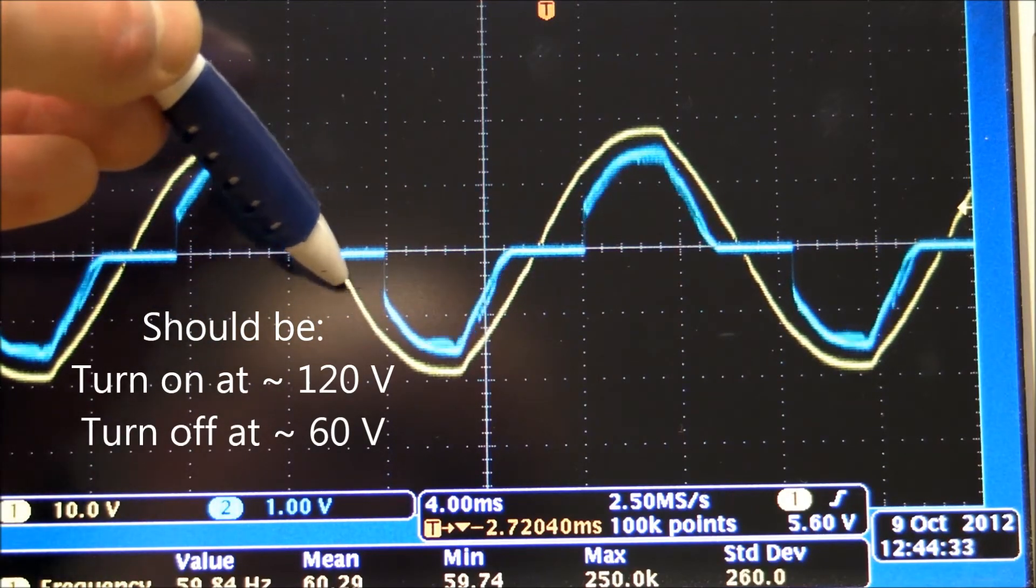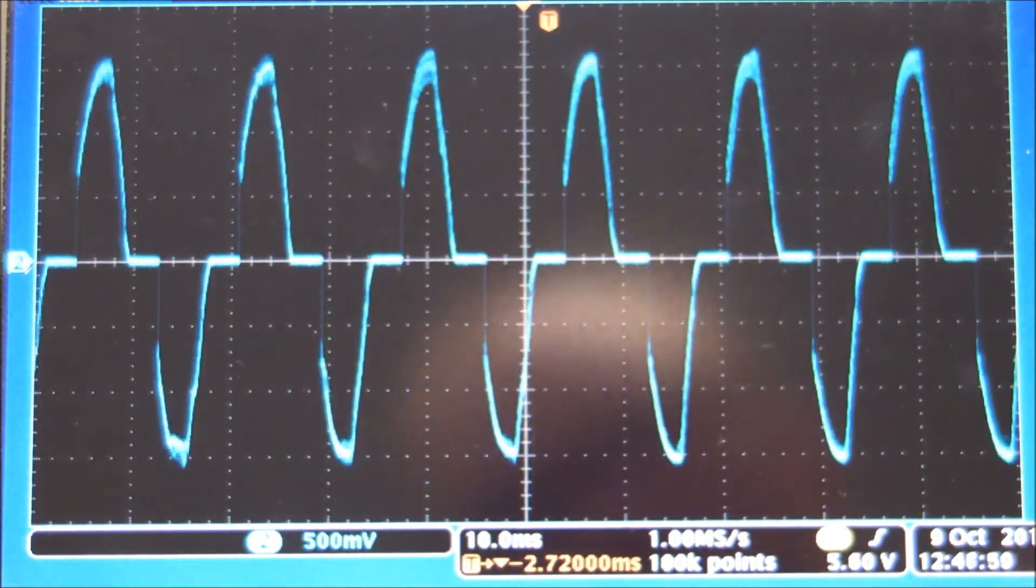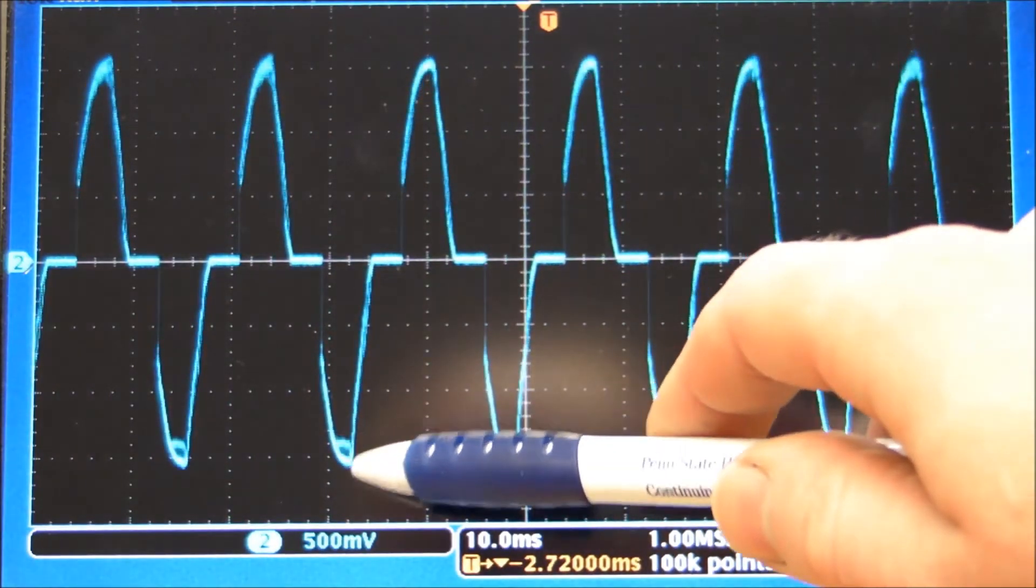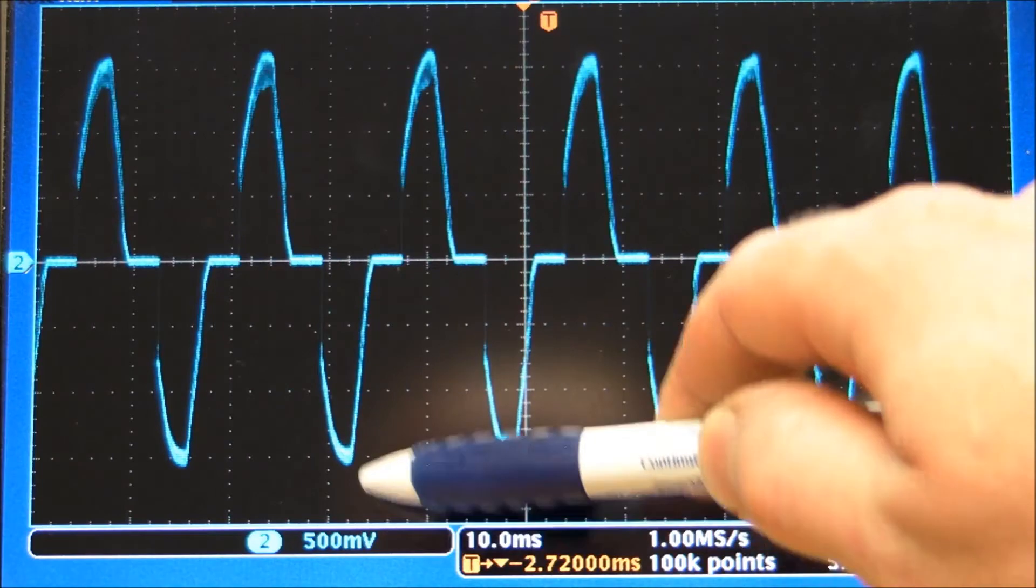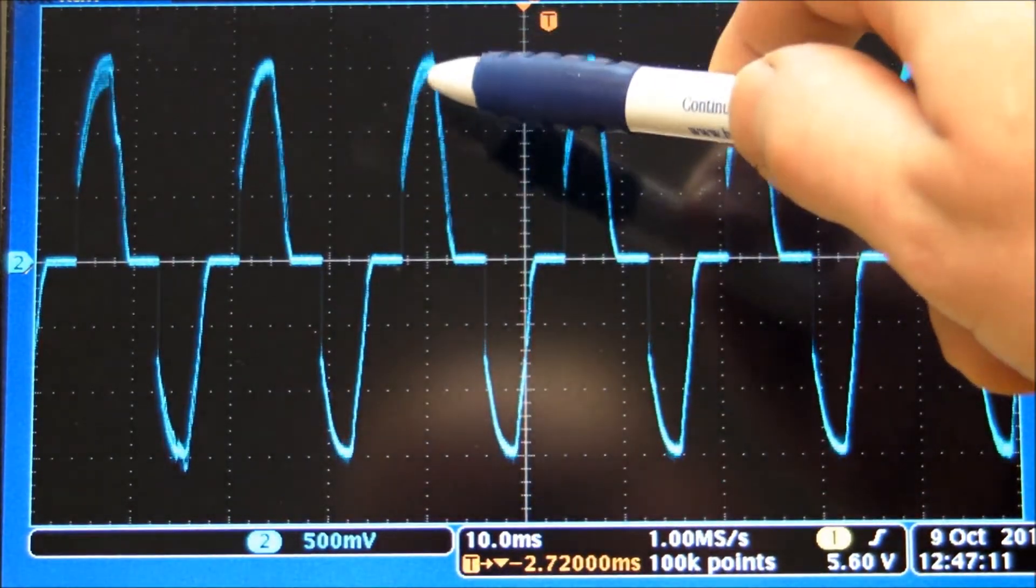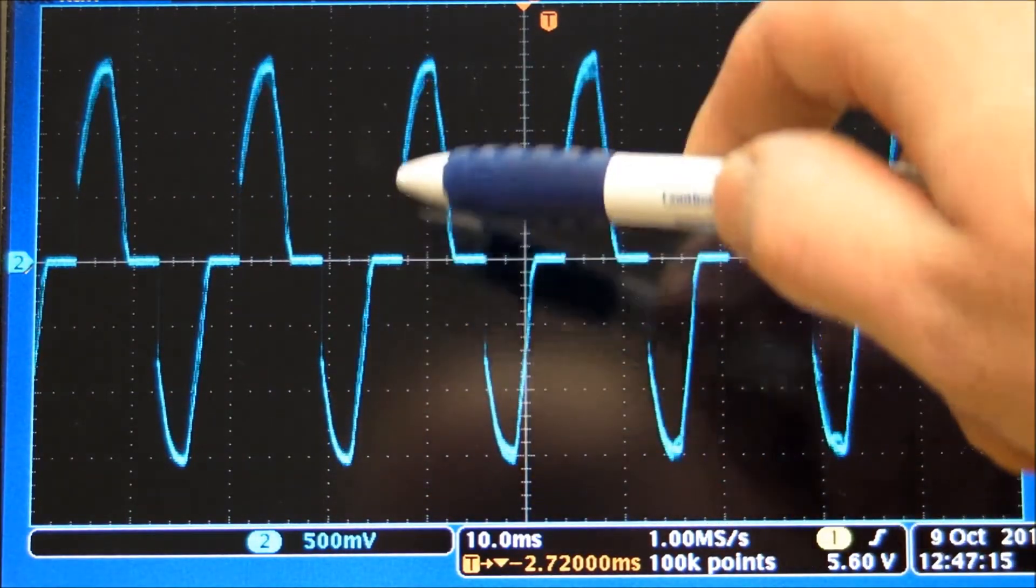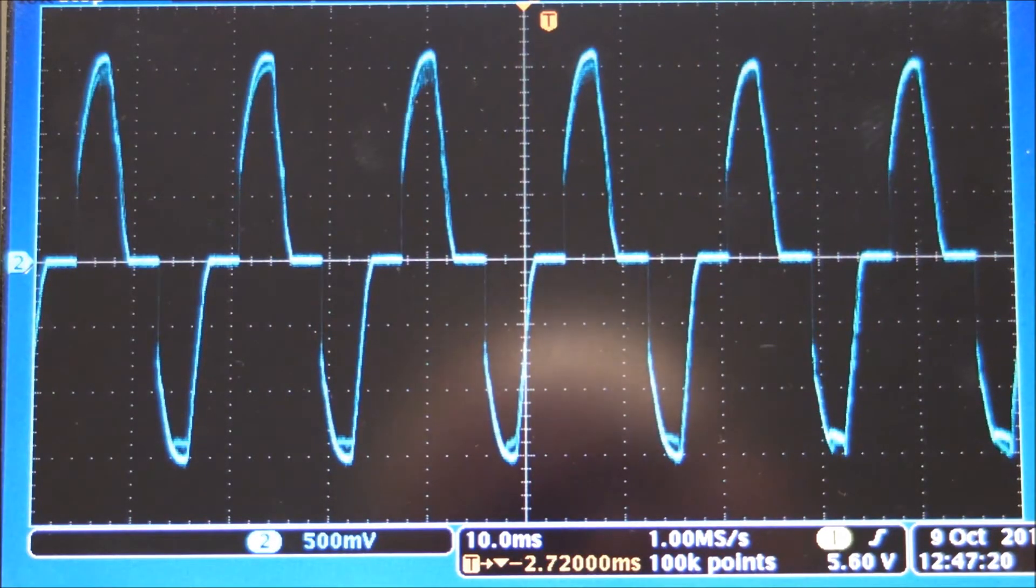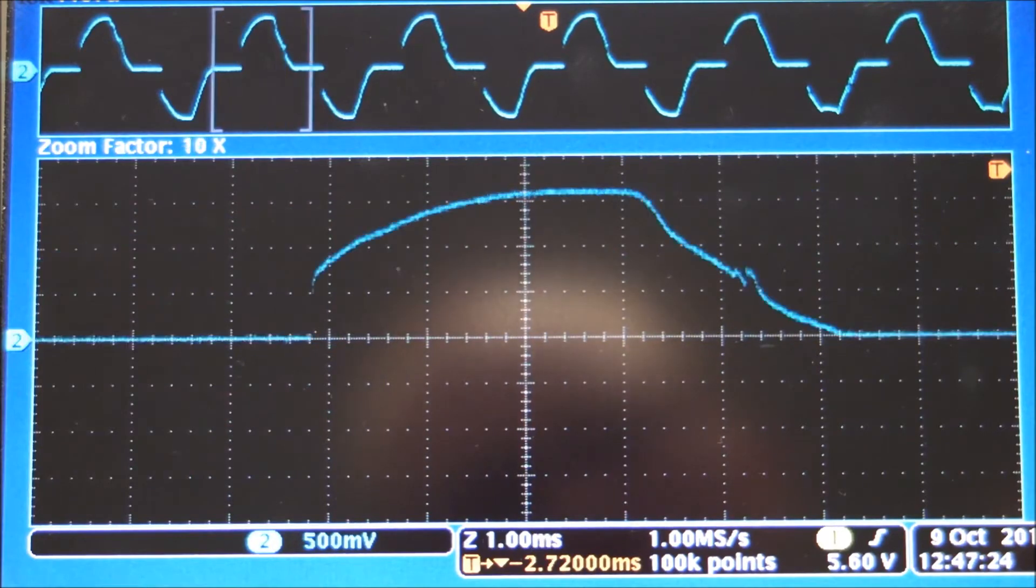I zoomed in on the current waveform and we're measuring 500 millivolt per division, which is actually 5 milliamp per division. You can see it reaches from 0 to 15 milliamp peak value. Let me pause it and zoom in on some of these things here.